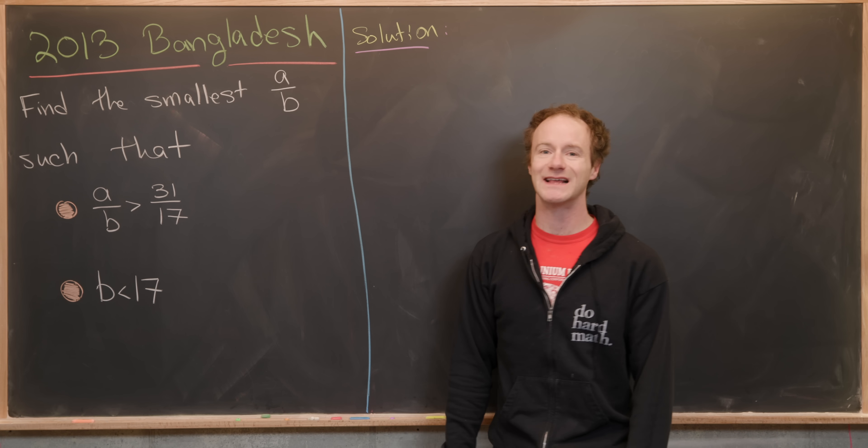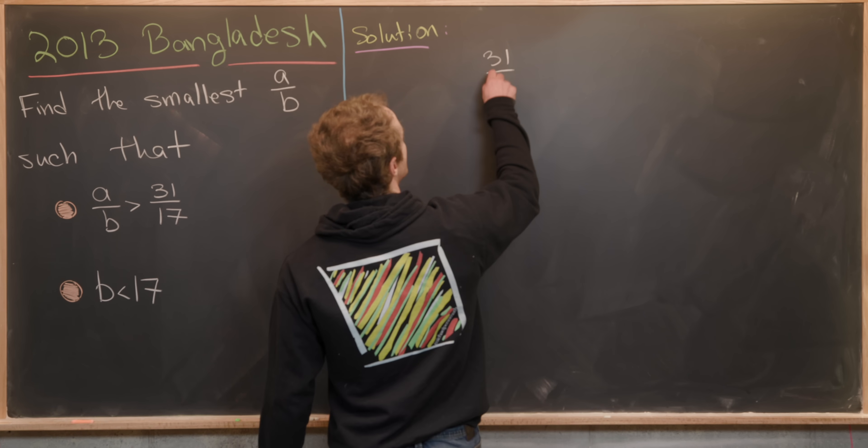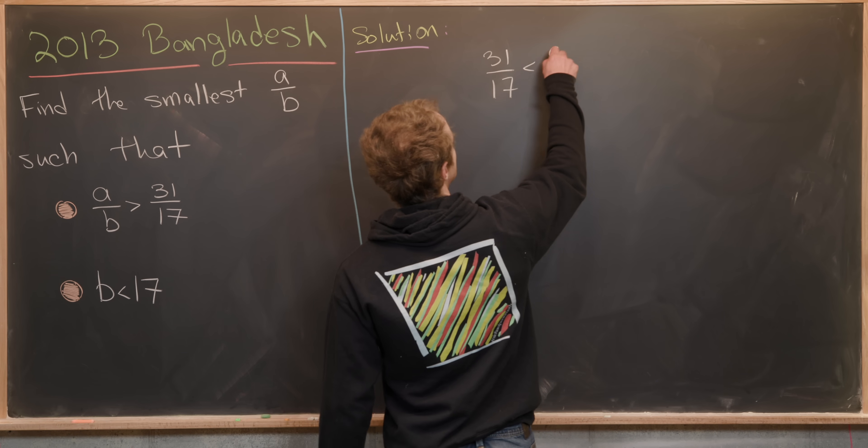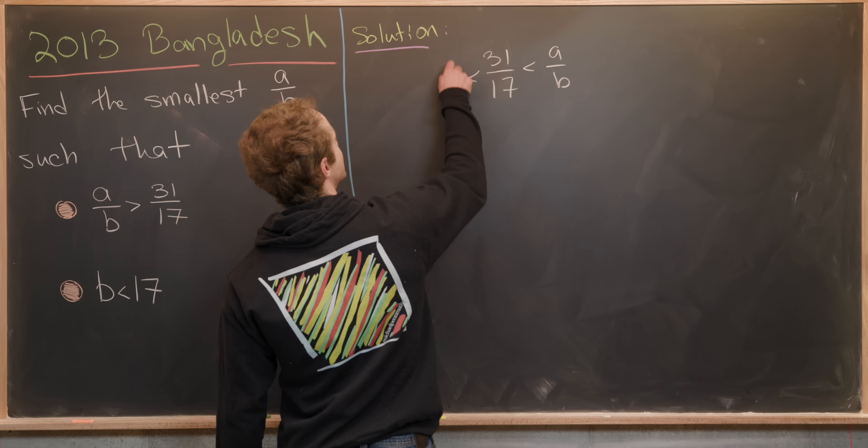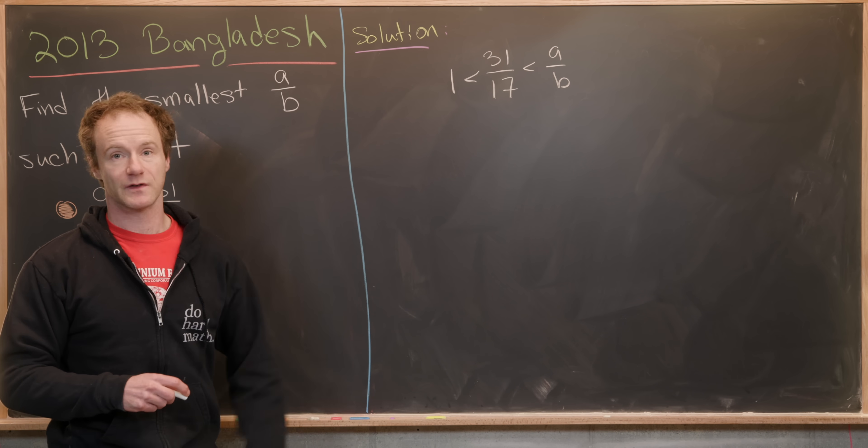This gives us a lower bound for A over B. Notice we have 31 over 17 is less than A over B. Since 31 over 17 is bigger than 1, we know that A over B is bigger than 1.